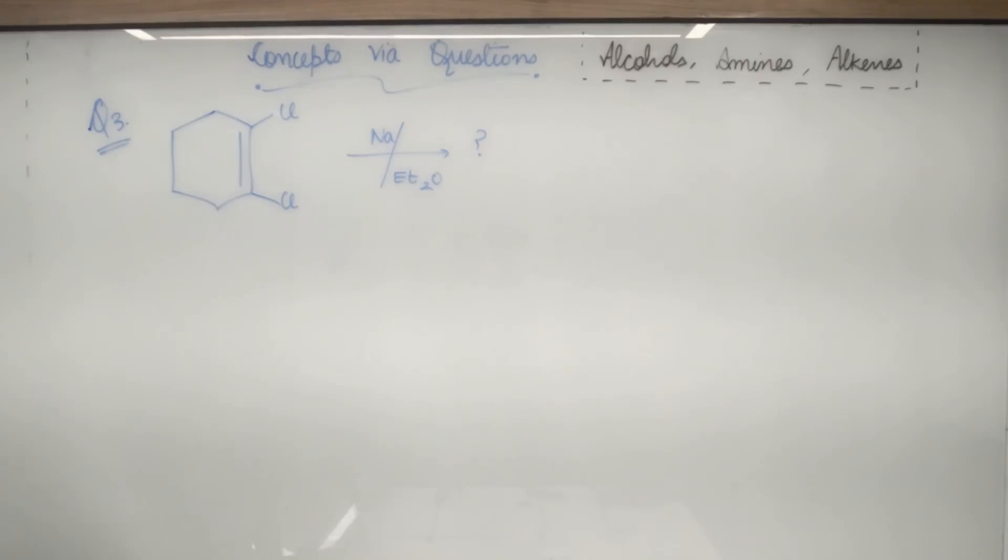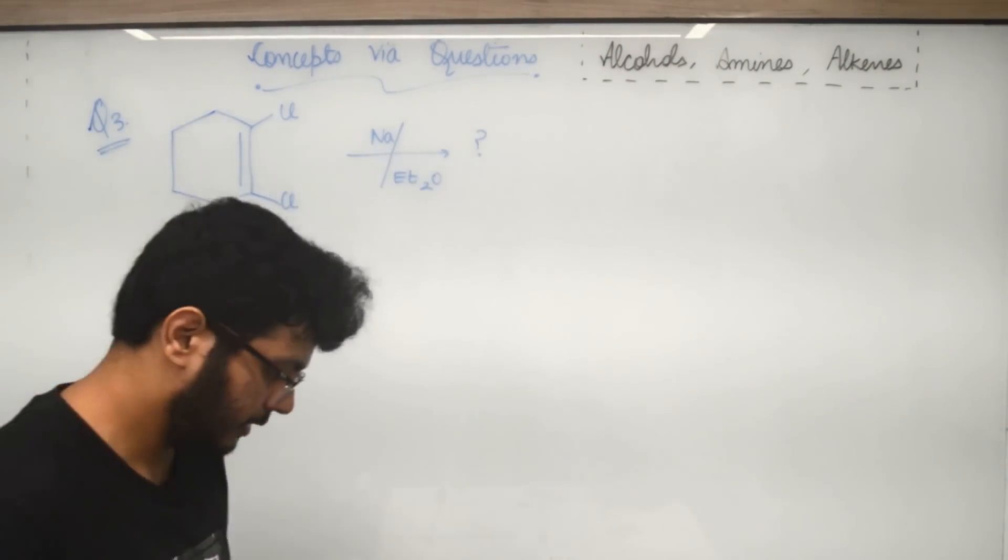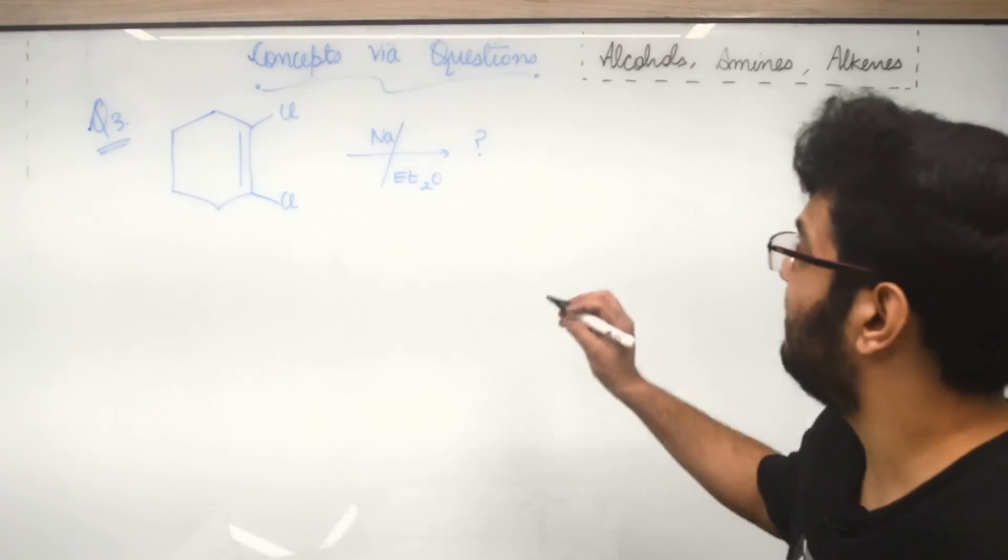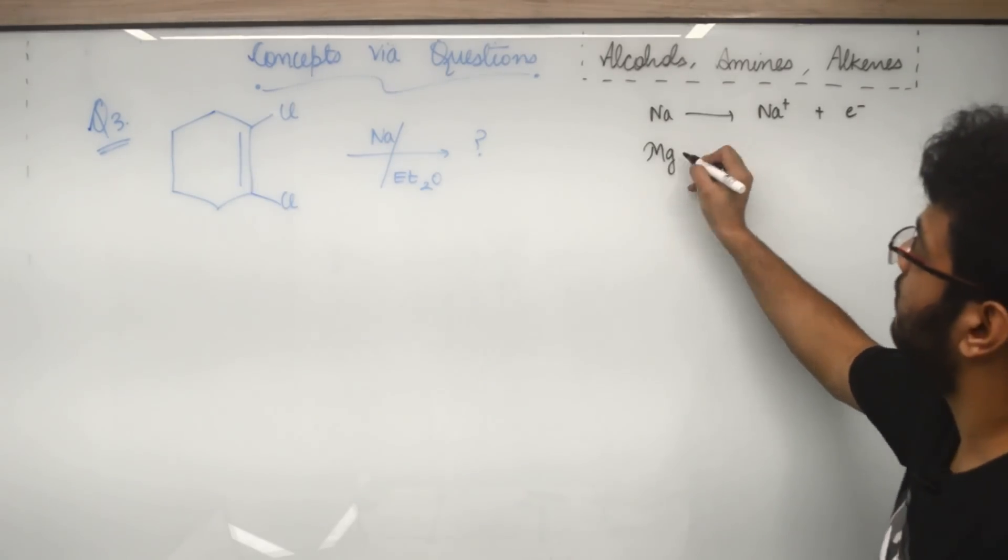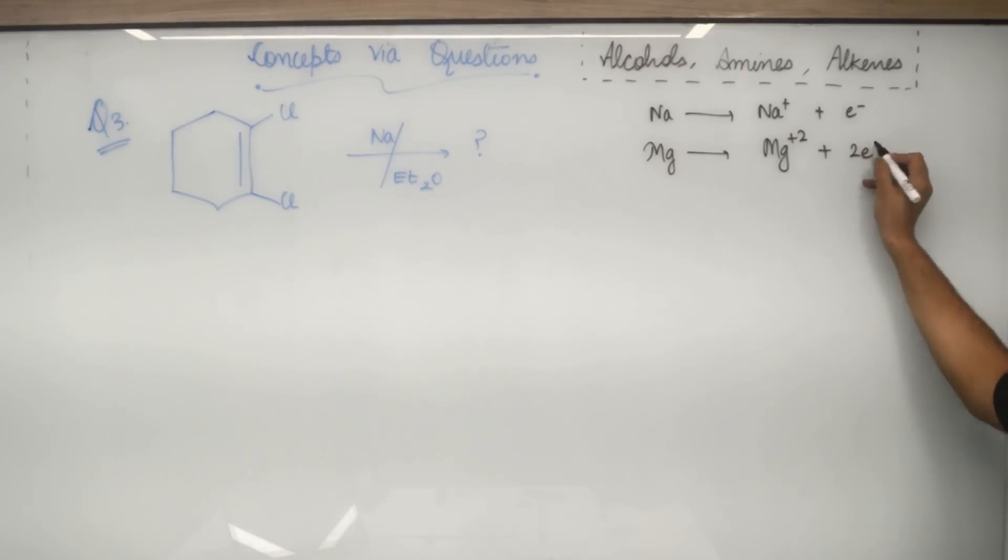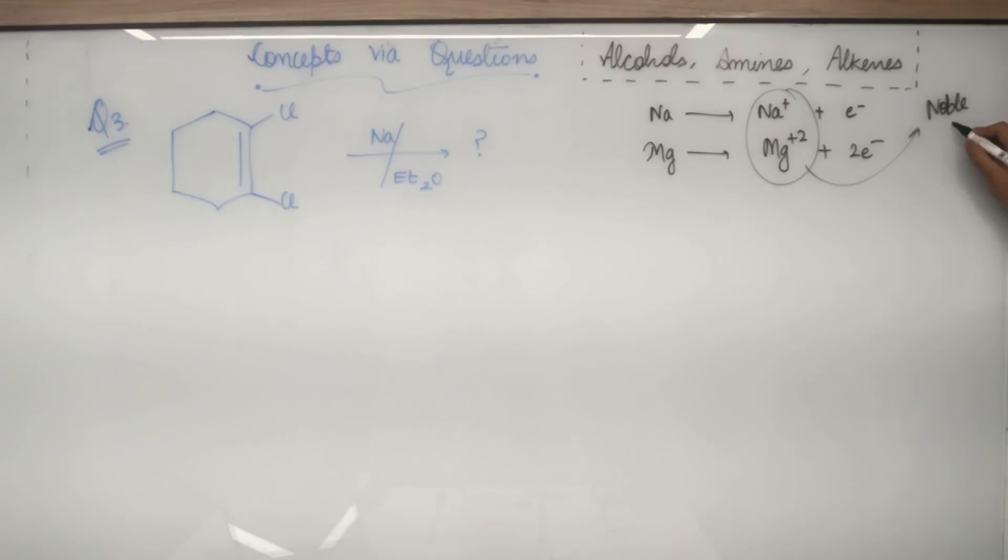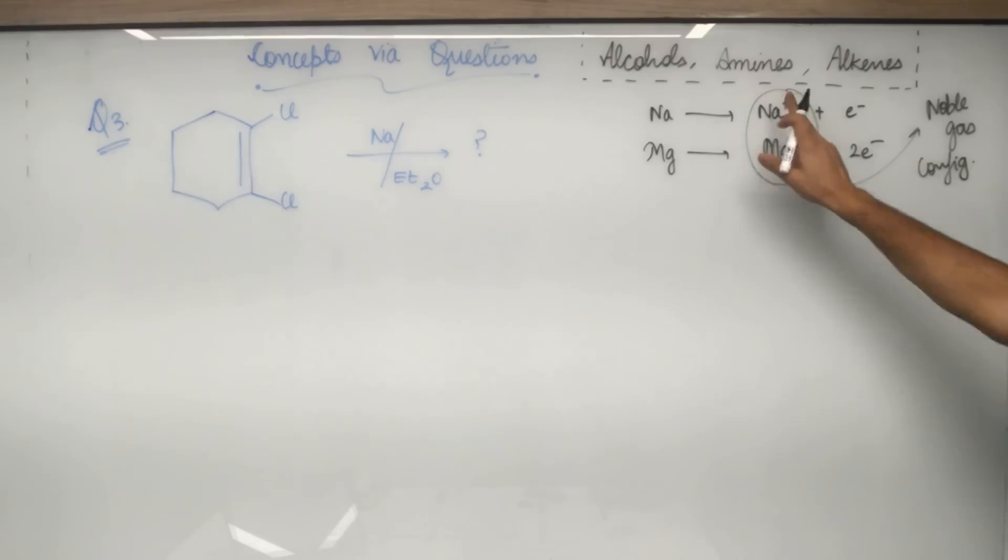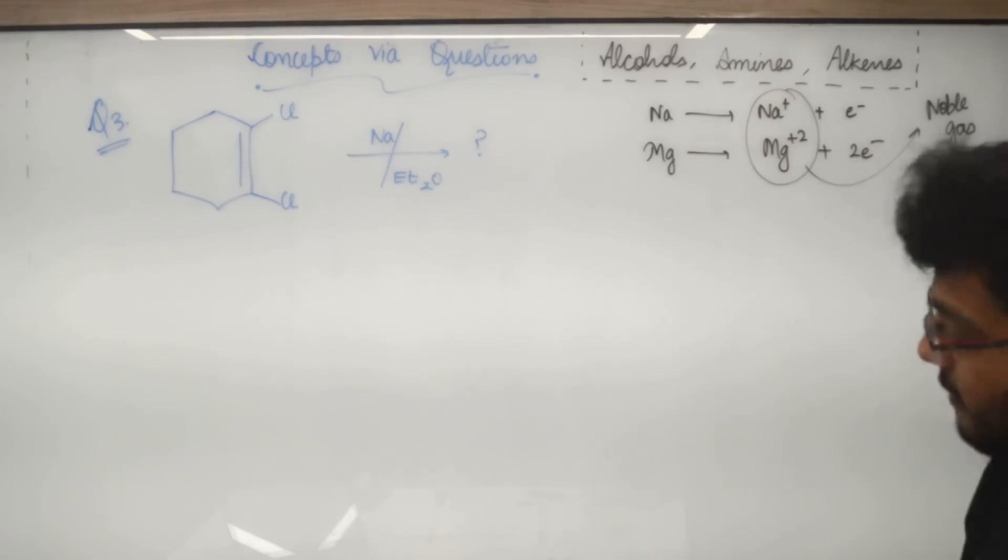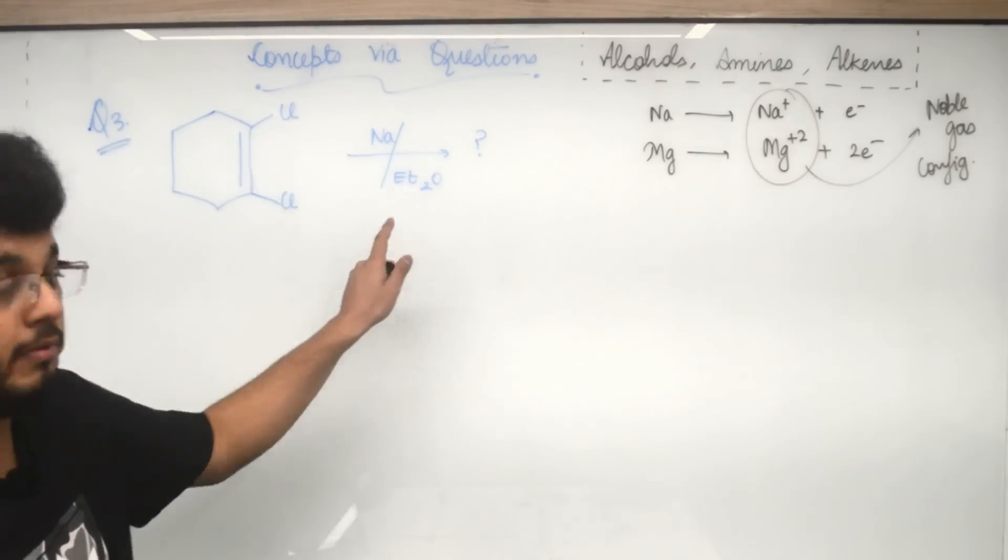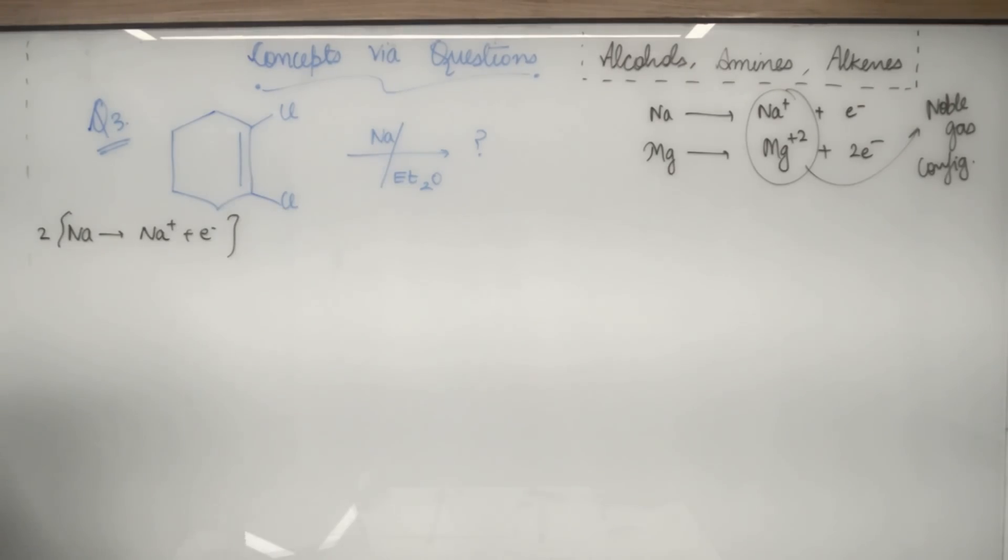Number three is a very popular Wurtz reaction. So this is a very important question from JEE Advanced point of view. Let us try to understand the mechanism here. I have multiple times told you, whenever I have any metal given, metal like Na, it will give Na plus plus electrons. Metal, whenever given, the work of the metal is to donate the electrons. Why? Because the compound which will be formed, like this compound, these have noble gas configurations. So this means these are stable in nature. So metal's work is to donate electrons. Okay, that is the thing. Now see, here I have metal given along with a protic solvent. So sodium will give me Na plus plus electrons. Multiply this by two times.